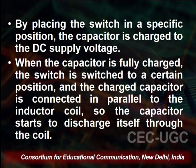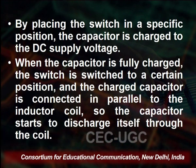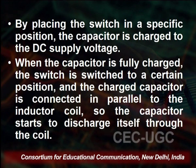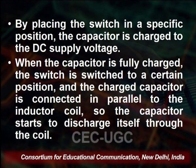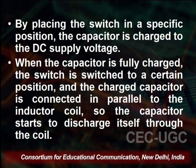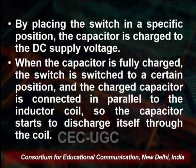By placing the switch in a specific position, the capacitor is charged to the DC supply voltage. When the capacitor is fully charged, the switch is switched to another position. The charged capacitor is connected in parallel to the inductor coil, and the capacitor starts to discharge itself through the coil.